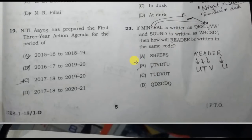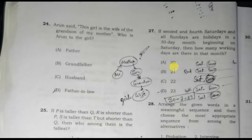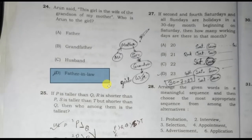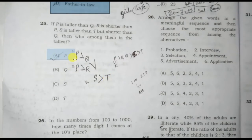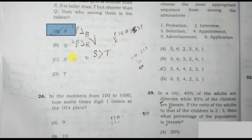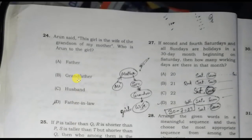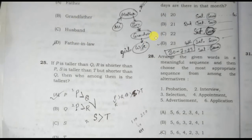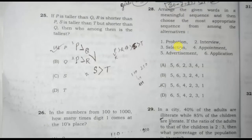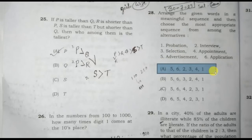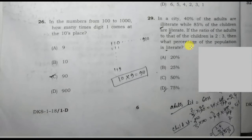Next question. Option D, with the number 8228. Option D, 75%, is the correct answer.